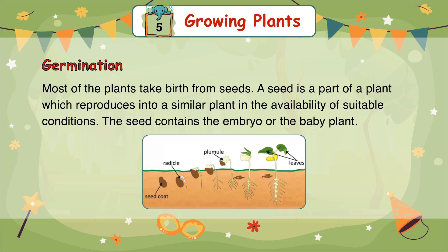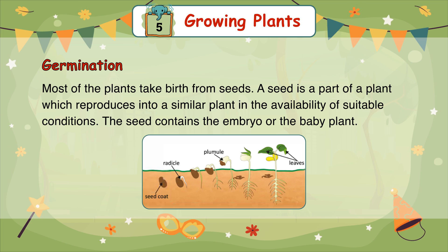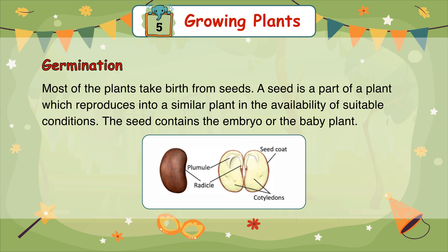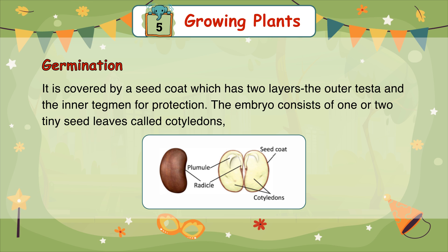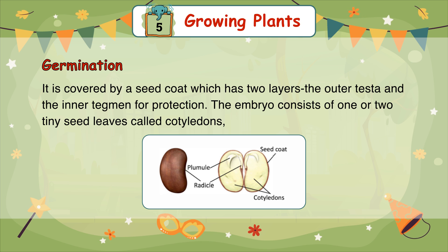Most plants take birth from seeds. A seed is a part of a plant which reproduces into a similar plant when suitable conditions are available. The seed contains the embryo, or the baby plant. It is covered by a seed coat which has two layers: the outer testa and the inner tegumen, for protection.